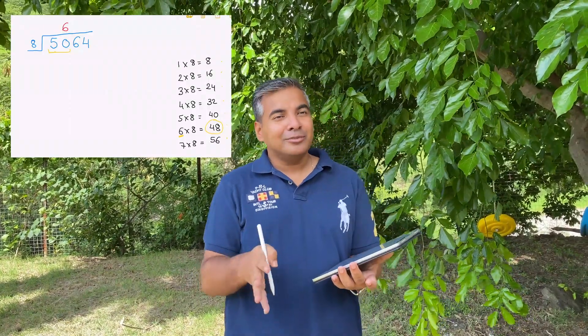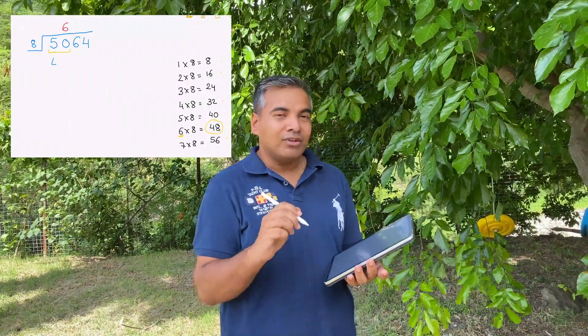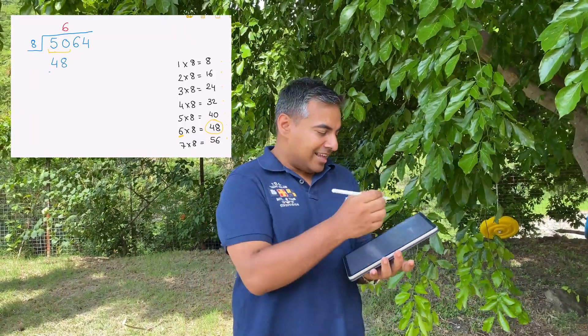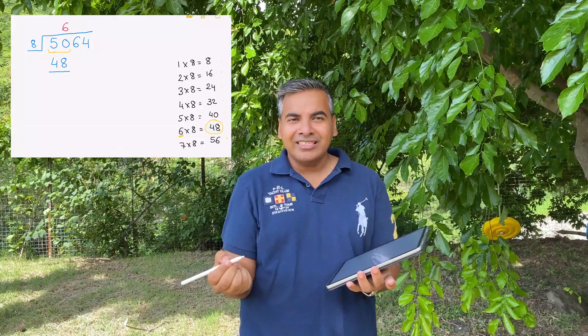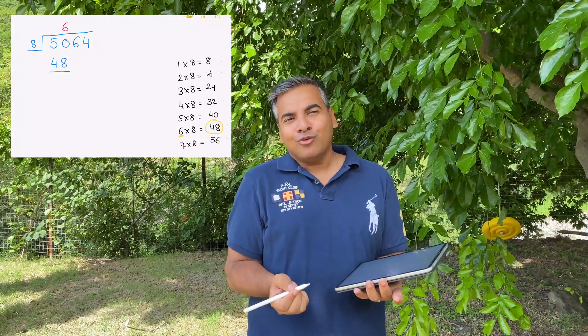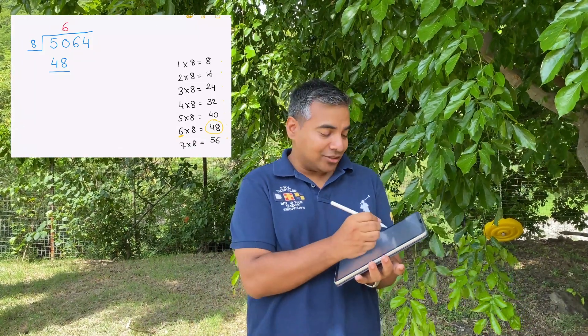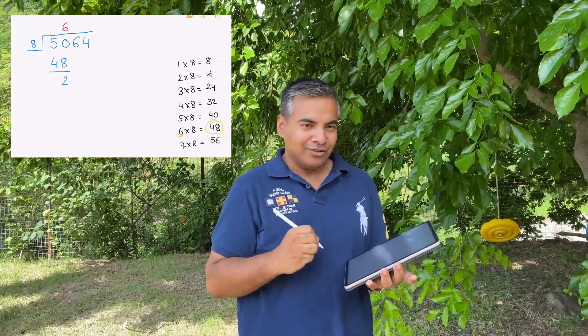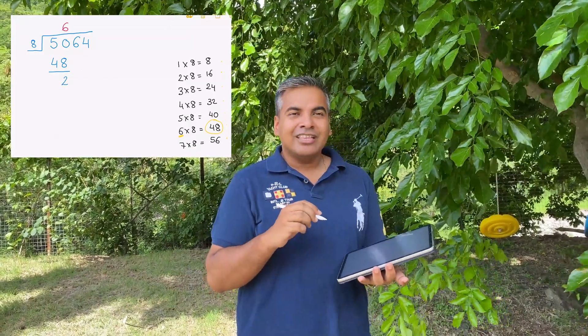The next step is to write down the multiple we've used. The multiple is forty-eight, so we write forty-eight underneath the fifty. Then we calculate the remainder: out of fifty we've used forty-eight, so how much is left? It's two. We write two underneath the forty-eight. That's step number three.